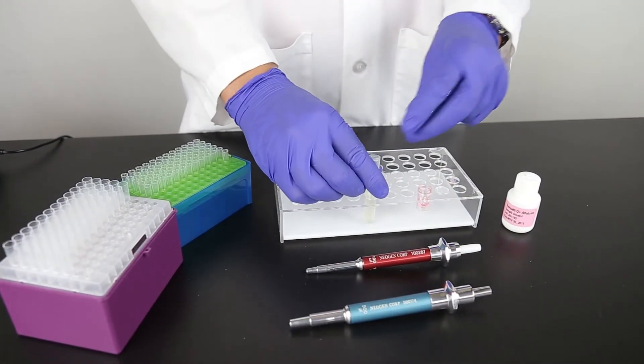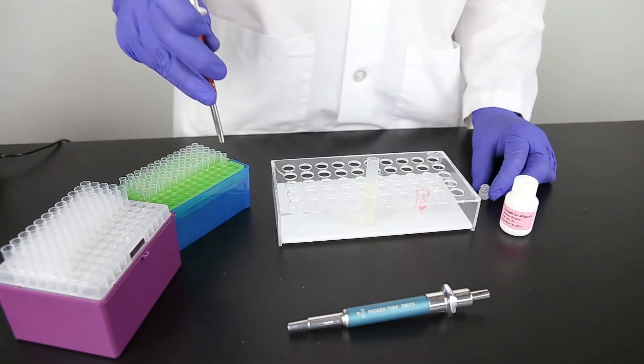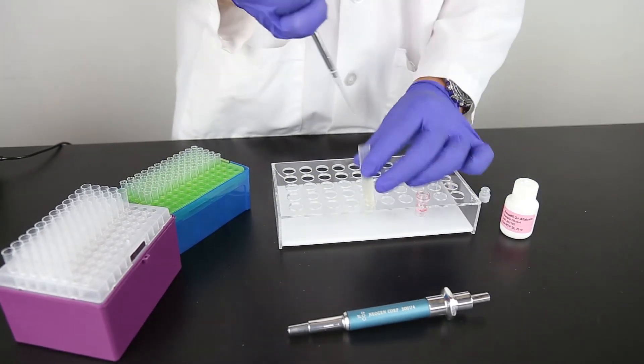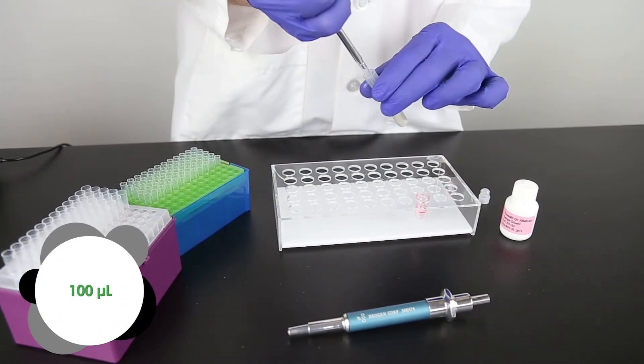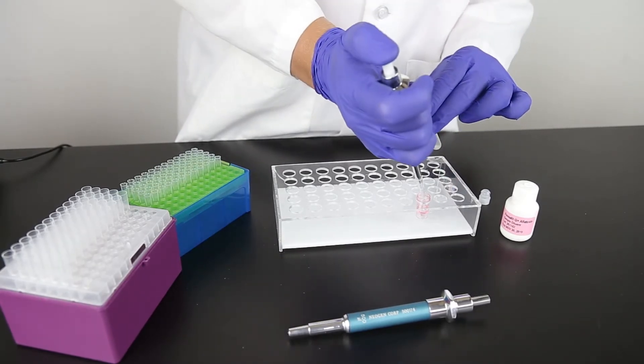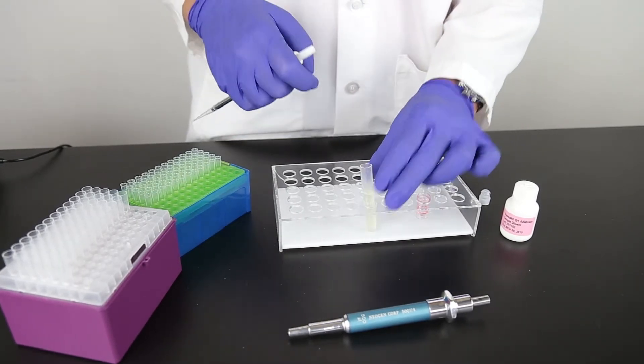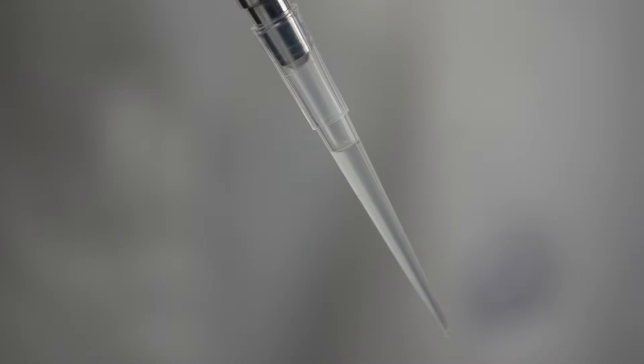For each sample you are testing, place a red dilution cup into the sample rack. Add 100 microliters sample to the red dilution cup. It is important to make sure the pipette tip is fully charged with liquid and doesn't have any air bubbles prior to dispensing the liquid into the cup.